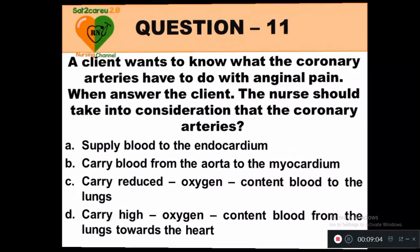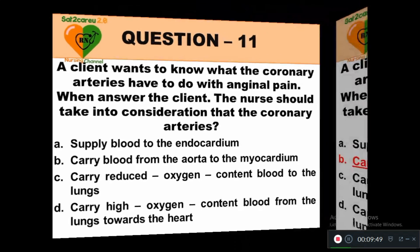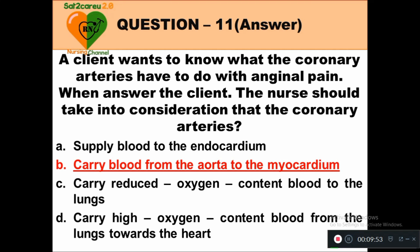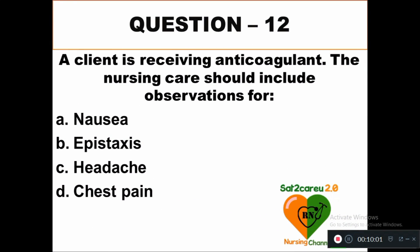Question 11: A client wants to know what the coronary arteries have to do with anginal pain. The nurse should take into consideration that the coronary arteries: option A supply blood to the endocardium, option B carry blood from the aorta to the myocardium, option C carry reduced oxygen content blood to the lungs, option D carry high oxygen content blood from the lungs toward the heart. The right answer is option B — coronary arteries carry blood from the aorta to the myocardium.